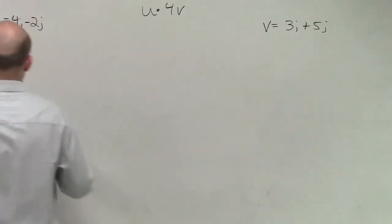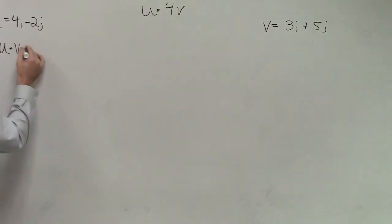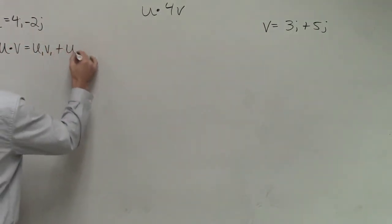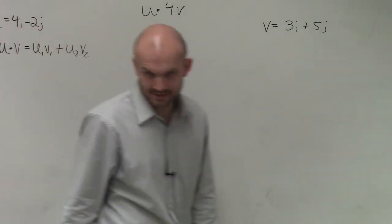So when you see the dot product, you should know that the dot product u·v is going to equal u1 times v1 plus u2 times v2. That's the dot product.